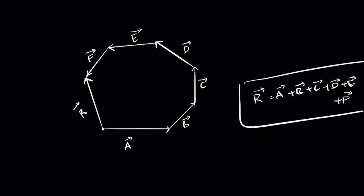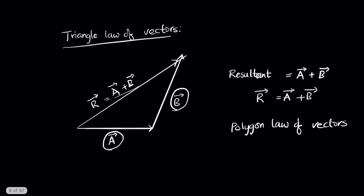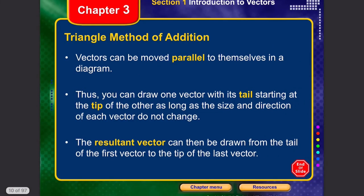The polygon law says that if all these vectors are arranged head-to-tail, the resultant vector is the one that closes the polygon, connecting the tail of the first vector to the head of the last. That final closing vector becomes R-bar. This is how we handle addition of vectors.